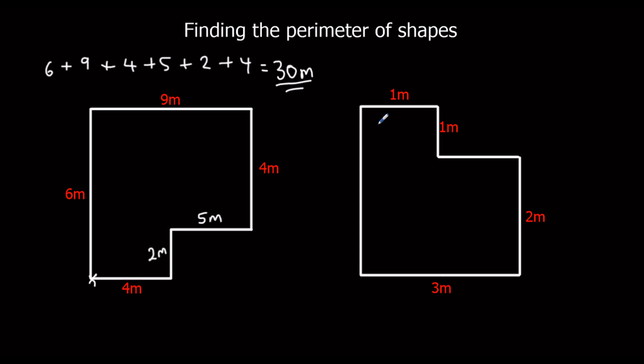The second shape here, let's look at the missing lengths first. So all the way up to the side, we've got 1 and 2, so that's going to be 3 meters. And we need this length here, it's 3 across the bottom, 1 across there, so we need another 2 meters.